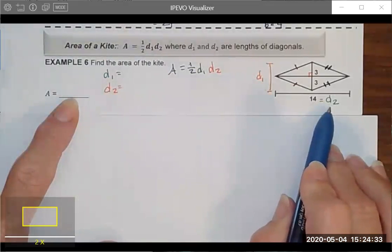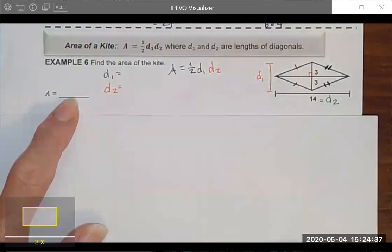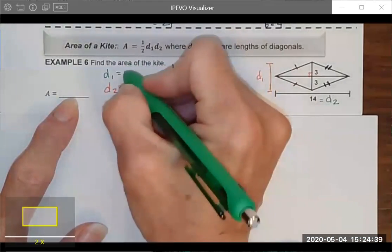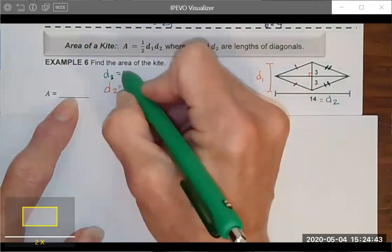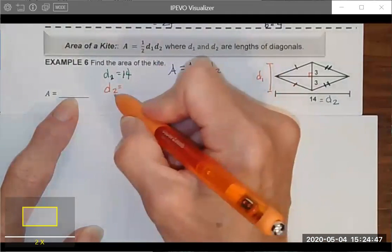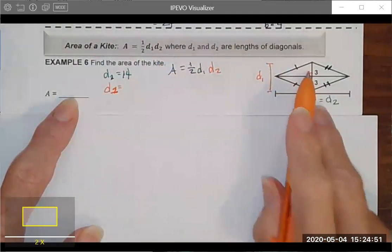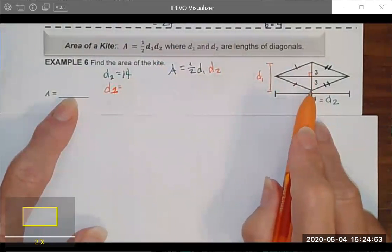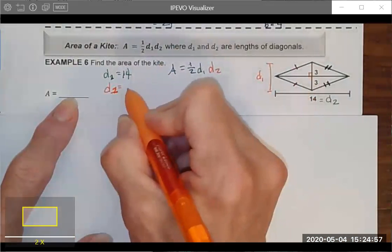In this particular example they gave us all the information we need. Diagonal 2 or diagonal 1, it really doesn't matter. One of my diagonals is 14 units. And I labeled it differently here than I did here. You got to wonder where my brain is sometimes. And then my other diagonal, we'll make this into a capital 1. My other diagonal is going to be the sum of these two because I'm going from one vertex to the opposite. So in this case that would be 6.